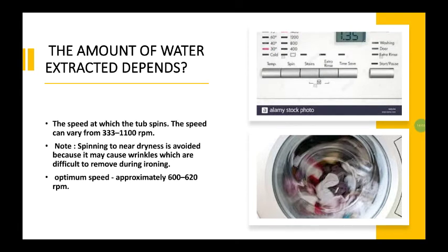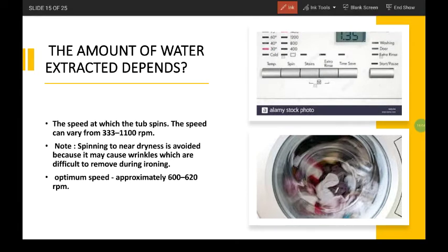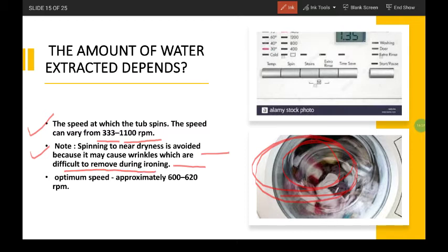How much amount of water extracted? It depends on the speed at which the tub spins. The speed can vary from 333 to 1100 rpm. Spinning to near dryness is avoided because it may cause wrinkles which are difficult to remove during ironing. What is the optimum speed of a spinner? It is approximately 600 to 620 rpm.